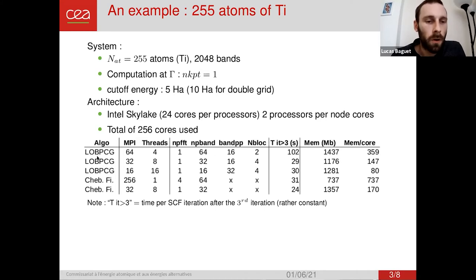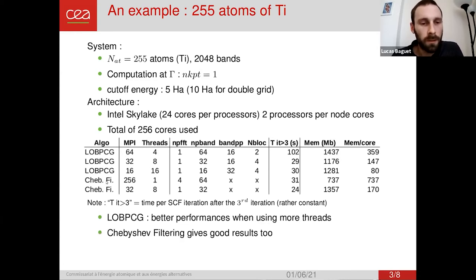So we see that for LOB-PCG, increasing the number of threads used with a total of cores used constant, so we reduce the number of MPI processes at the same time, we get better performances. And also for using the Chebyshev filtering algorithm, we obtain interesting results too. So this algorithm should be more considered in the future.